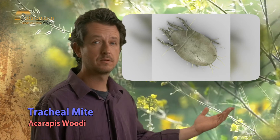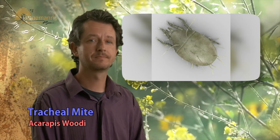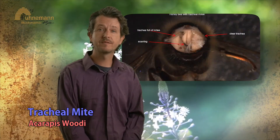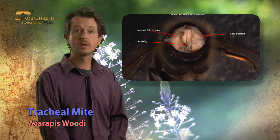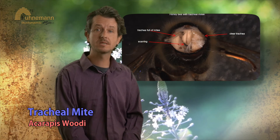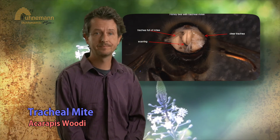Tracheal mite, Acarapis woodi. This is a parasite that invades the lungs of bees, lays eggs and starts to nibble the lungs until the bees suffocate and die. Treatment: the long-range solution for this parasite is to work with a natural queen. Let your hive swarm in spring or split the hive in two and let the hive produce a new, natural and healthy queen.